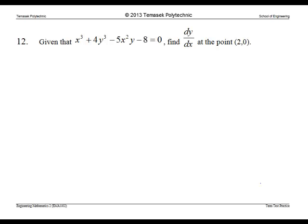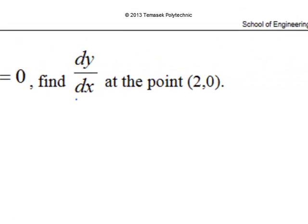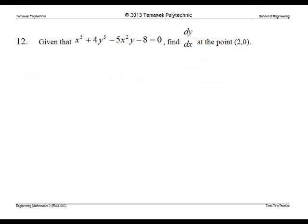Question 12. Given the equation, we are asked to find dy/dx at the point 2, 0. To find dy/dx, we use implicit differentiation. To start, we take d/dx on both sides of the equation.